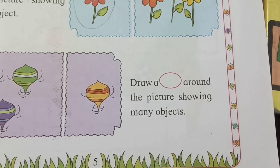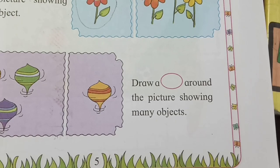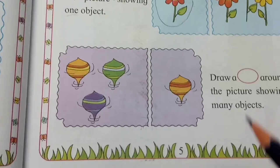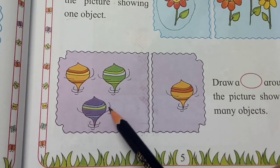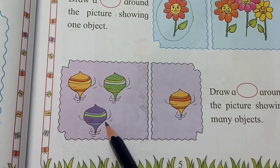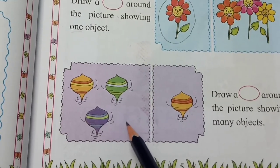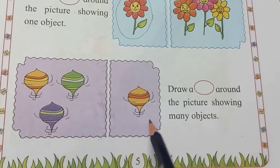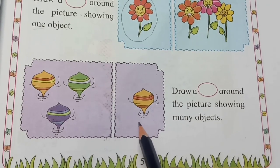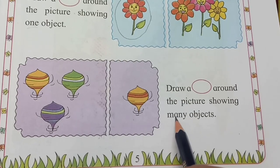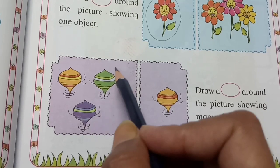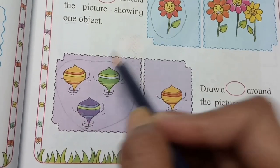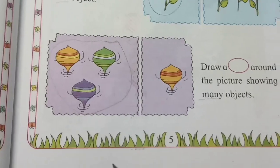अभी draw a circle around the picture showing many objects — one कहाँ है और many कहाँ है बताओ। Correct, यह है one और यह है many। One याने एक ही, और जहाँ एक से ज्यादा होगा वो होगा many। हम लोग many को circle करेंगे। Many objects — now we will circle many objects. This is my circle.